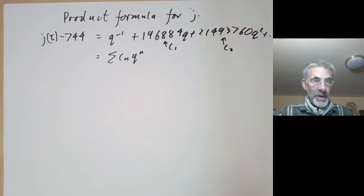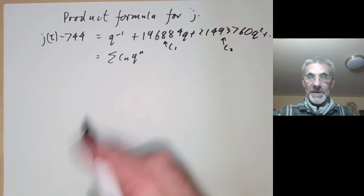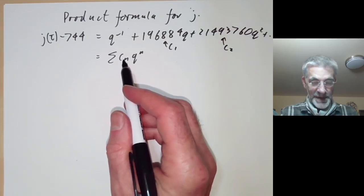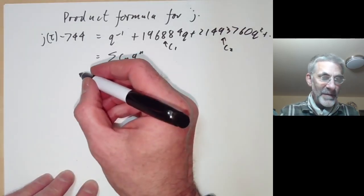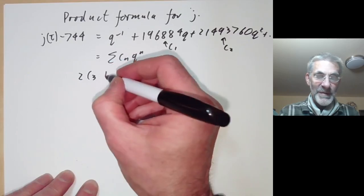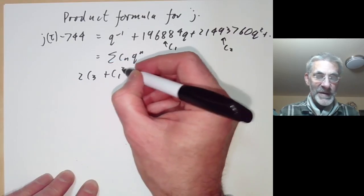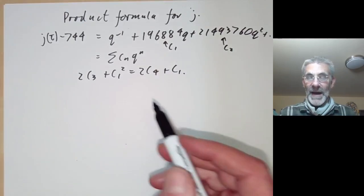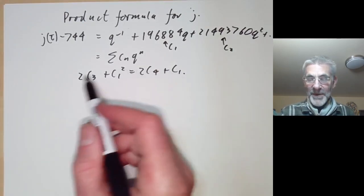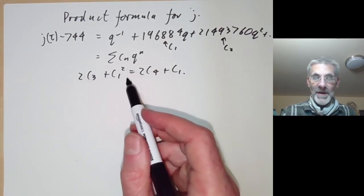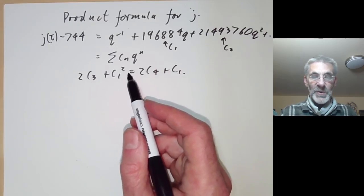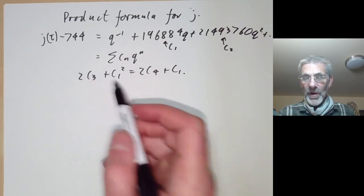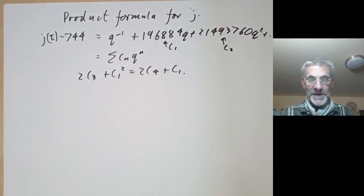Last lecture we used Hecke operators to find some complicated non-linear relations between the coefficients c(n). The simplest one we found was 2c(3) + c(1)² = 2c(4) + c(1), and it was fairly obvious from the way we found this — which came by thinking about the coefficient of q² in the second Hecke operator — that there were lots of even more complicated generalizations.